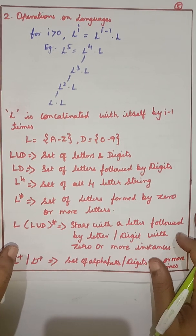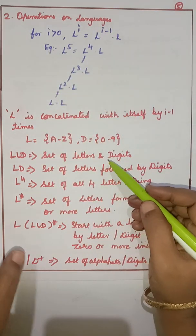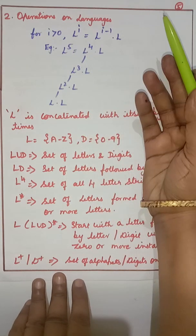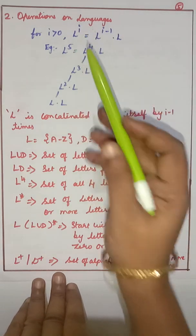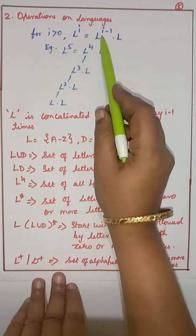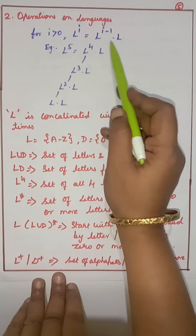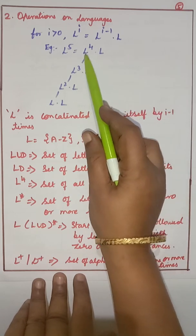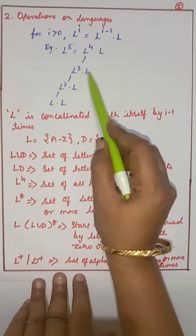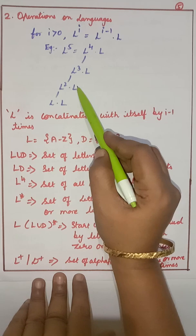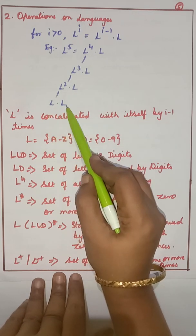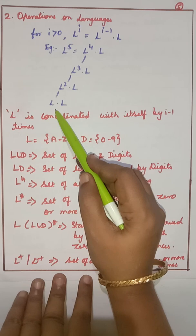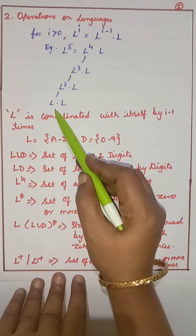Now we proceed with operations on languages. Similar to strings, languages can be concatenated. L to the power of i equals L to the power of i minus 1 concatenated with L. Any number of languages can be concatenated: L^4 is obtained by L^3 into L, L^3 by L^2 into L, and L^2 by L into L. So any number of languages can be concatenated together.